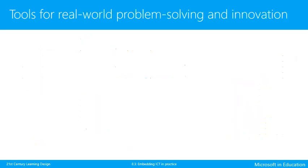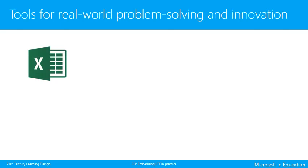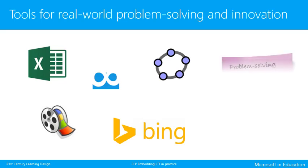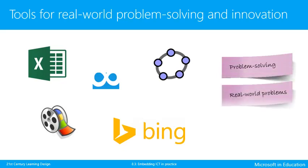For real-world problem-solving and innovation, students could use tools such as Excel, MovieMaker, Bing and apps such as M8 MindMap and GeoGebra to work on solving problems by developing solutions that are new to them. These technologies can also provide opportunities for students to innovate and put their ideas or solutions into practice in the real world.